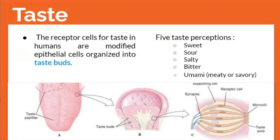Five taste perceptions: sweet, sour, salty, bitter, and umami. Umami can be found in monosodium glutamate (MSG) — for example, in products like Magic Sarap, Vetsin, and many others.